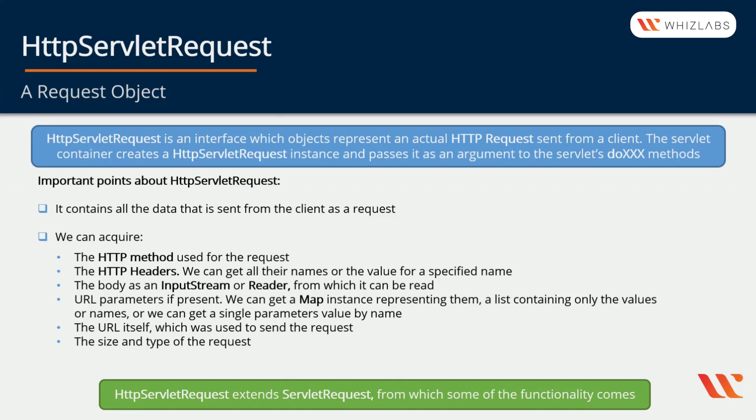We'll see what and how they are used and what methods we have to manipulate them. HttpServletRequest is an interface whose objects represent an actual HTTP request sent from a client. The servlet container creates an HttpServletRequest instance and passes it as an argument to the servlet's DoX methods.